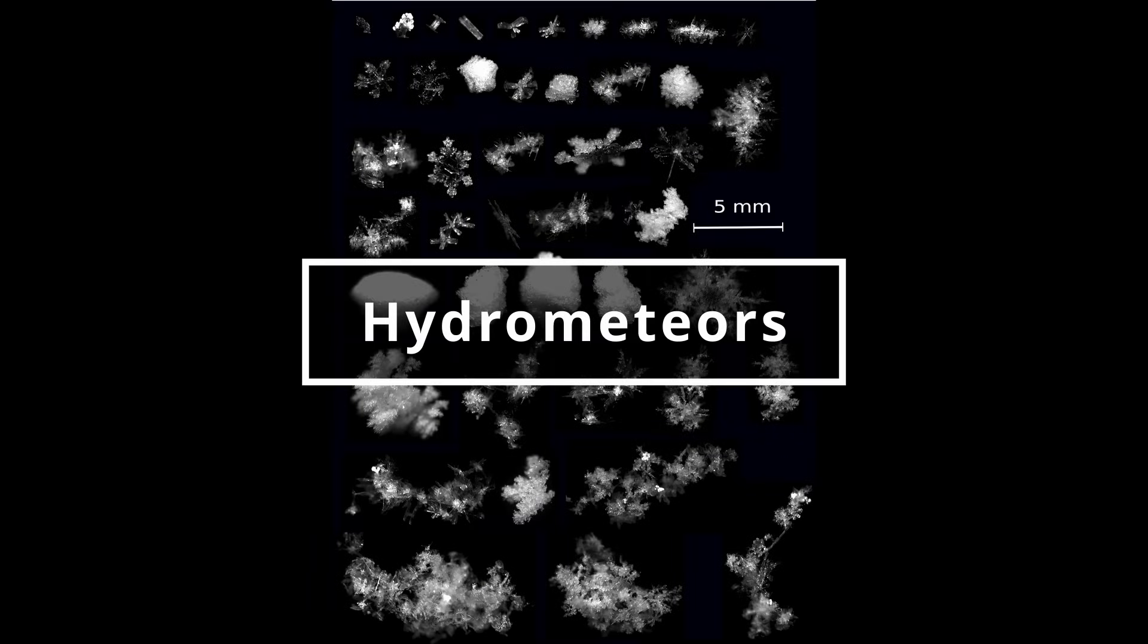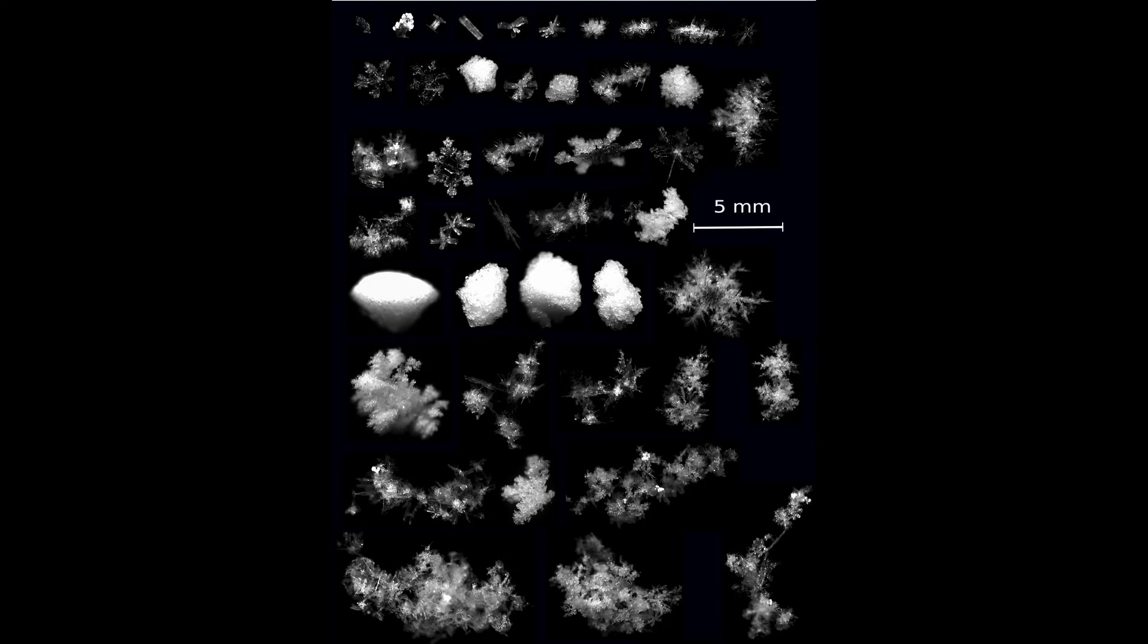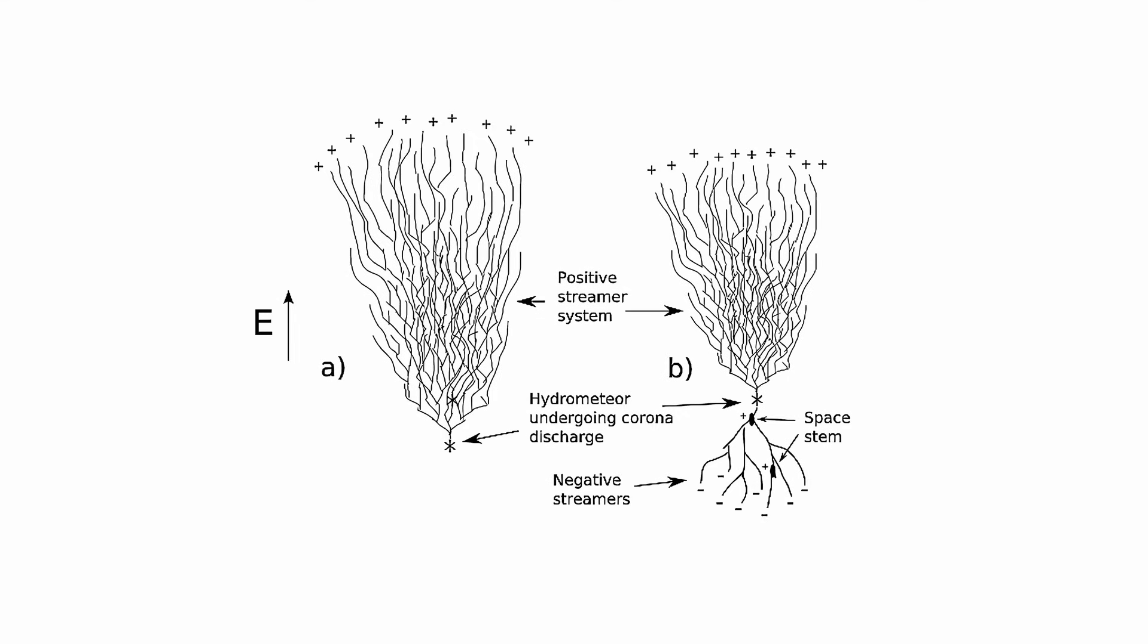One proposed concept suggests the presence of ice particles or liquids referred to as hydrometeors within thunderstorms. These hydrometeors may play a role in diminishing the necessary electric field strength for electrical breakdown.